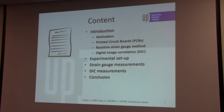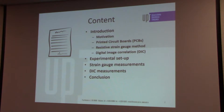The content of my presentation: first I will explain in the introduction what is the motivation, what are Printed Circuit Boards and what they are used for, and the methods used for measurements — resistive strain gauge measurement and Digital Image Correlation. After that, the experimental setup, then the strain gauge measurement and DIC results, and finally a conclusion and comparison between them.